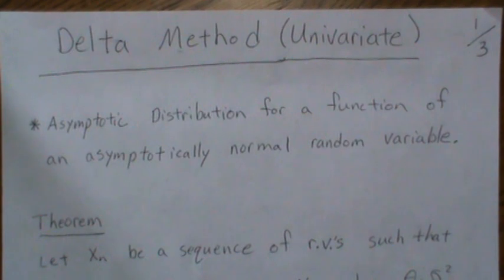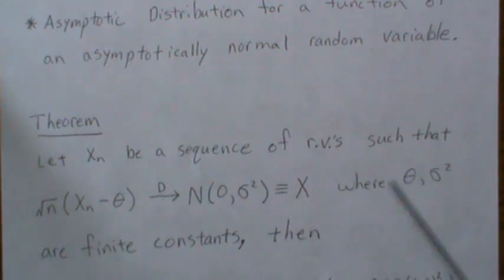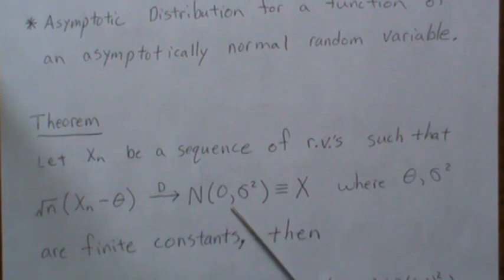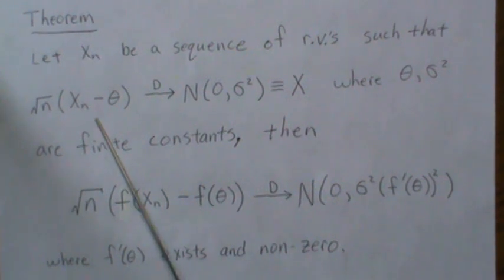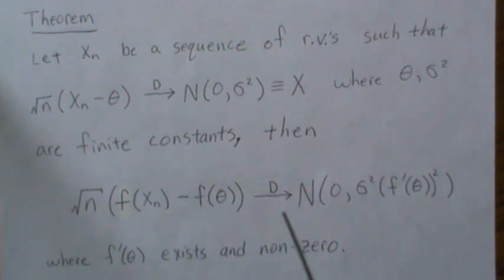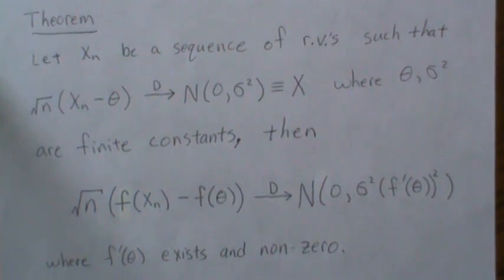The theorem is: let X_n be a sequence of random variables such that this sequence converges in distribution to a normal(0, sigma squared) distribution. Where theta and sigma squared are finite constants, then we take the function of our random variable — g(X_n) — and g(theta) converges in distribution to normal(0, sigma squared) times the square of the first derivative g'(theta).